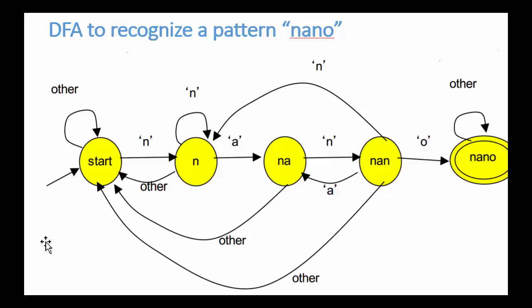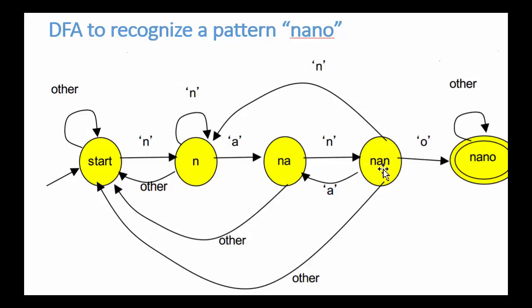Here's a design of that machine. It is a state machine, so we have a number of states, and as the stream comes in the machine will go from one state to another, or maybe remain in the same state. We have a start state and a state n — if you're in state n, you have seen a character n prior to that. If you're in state na, you have seen the characters n-a prior to that. Similarly, if you're in n-a-n, you have seen n-a-n. If you're in n-a-n-o, we call that an accept state — that means we have seen the pattern n-a-n-o.